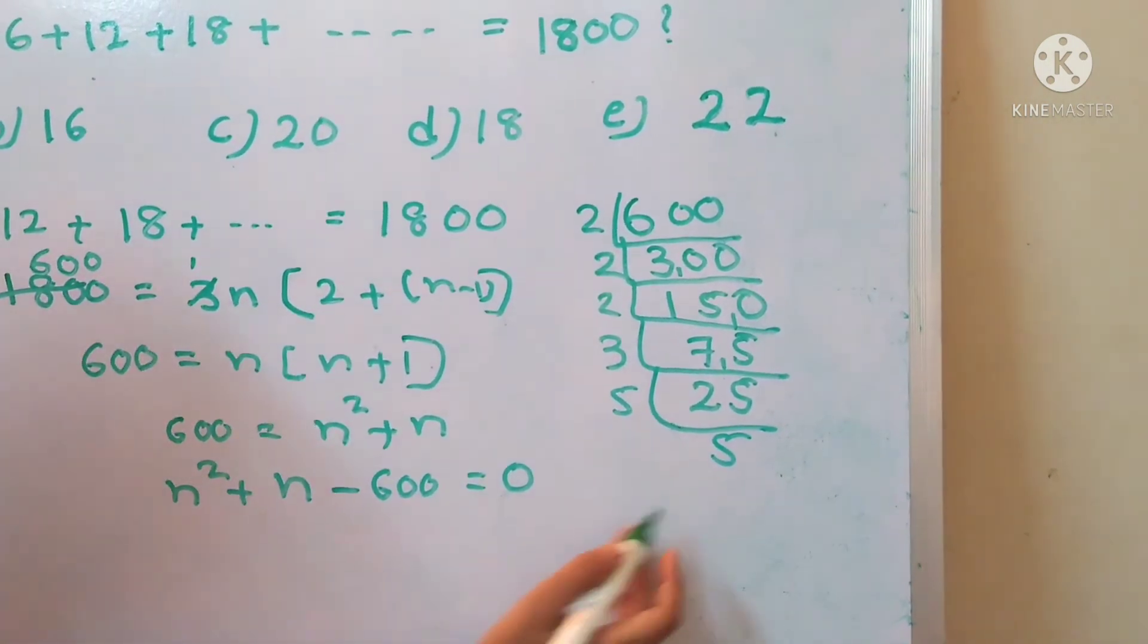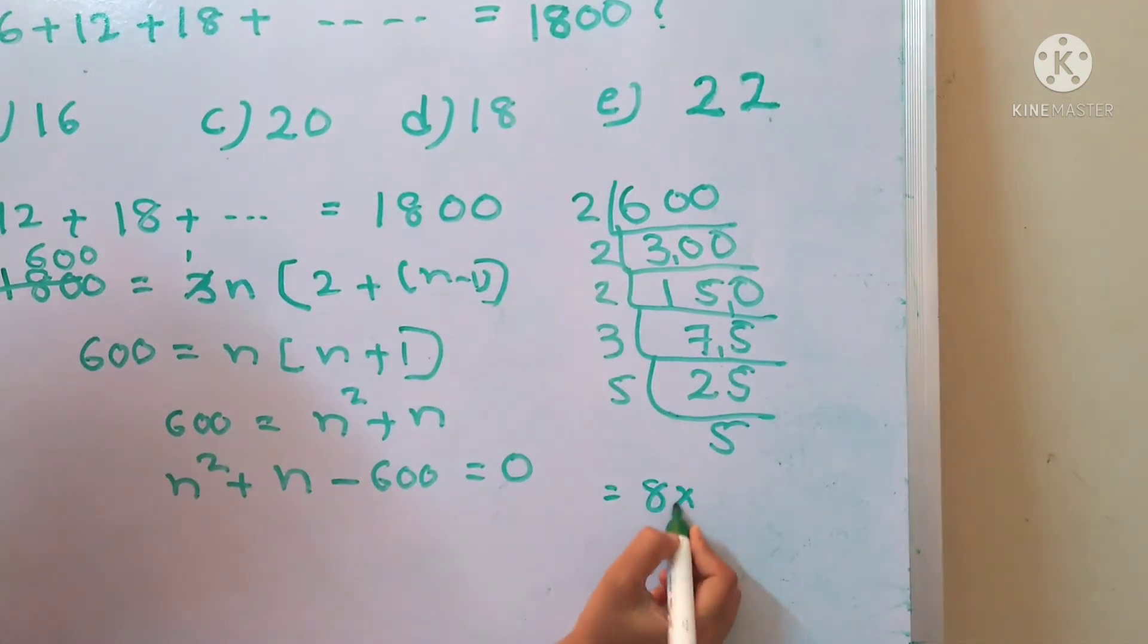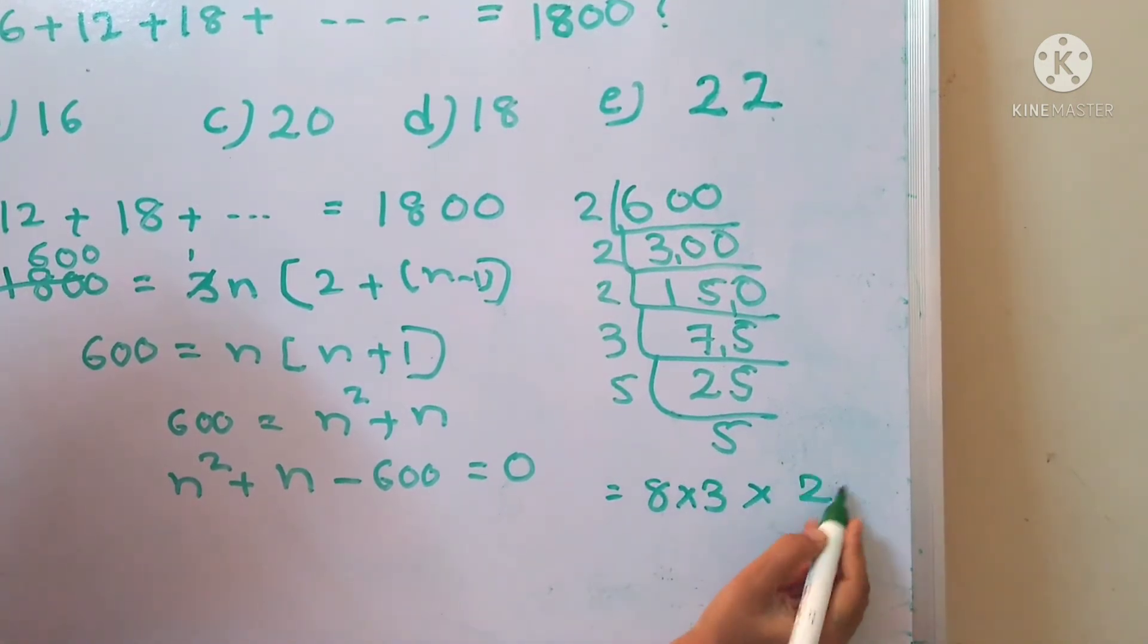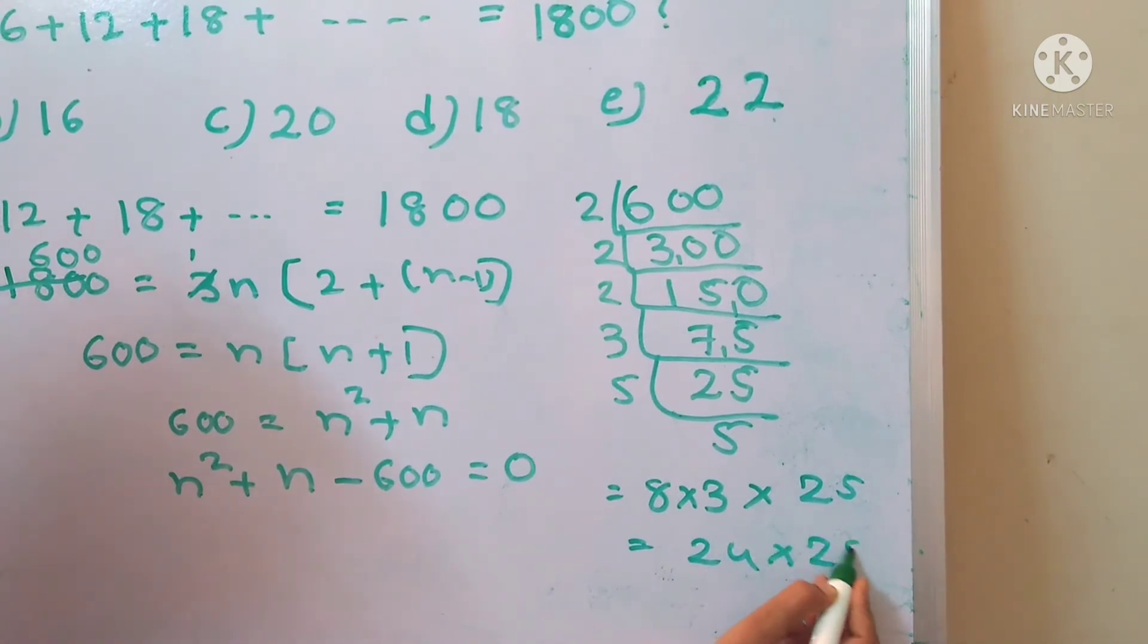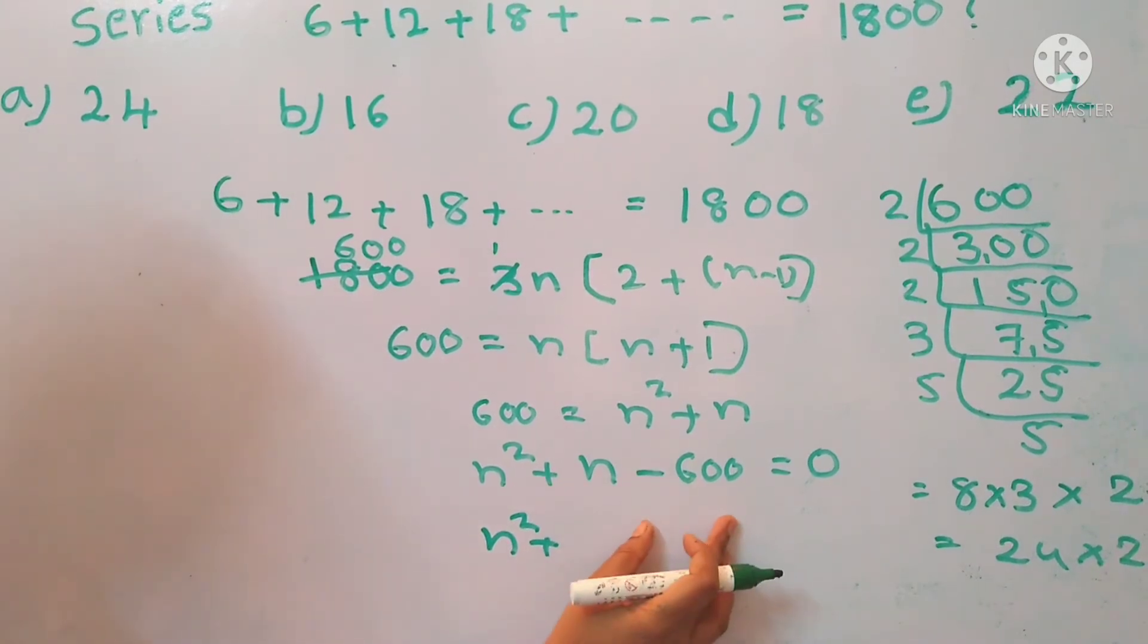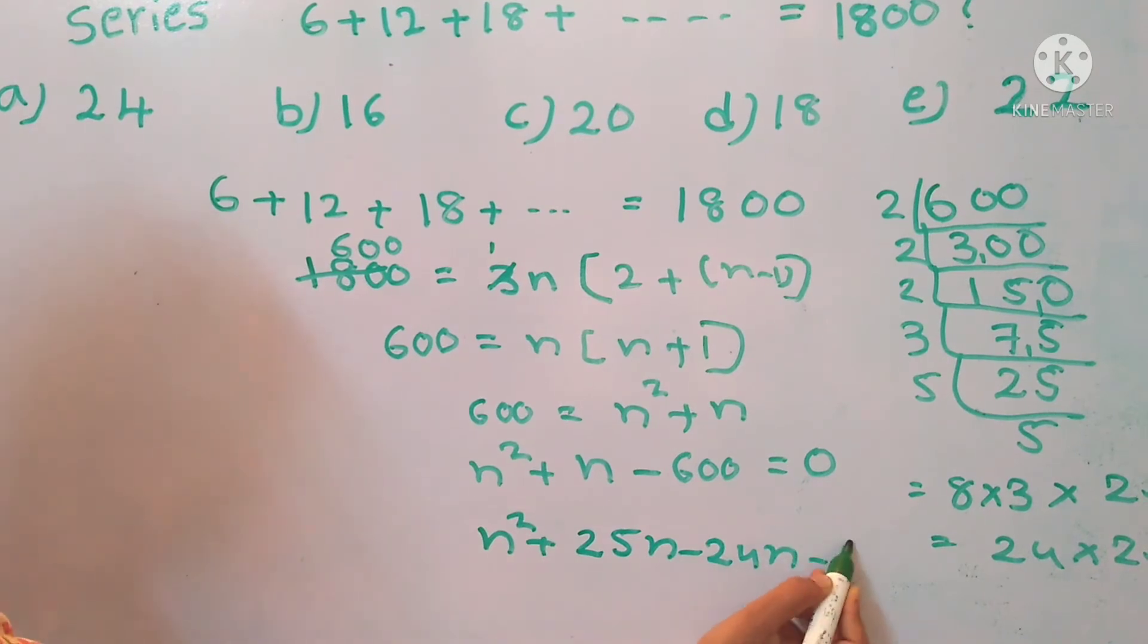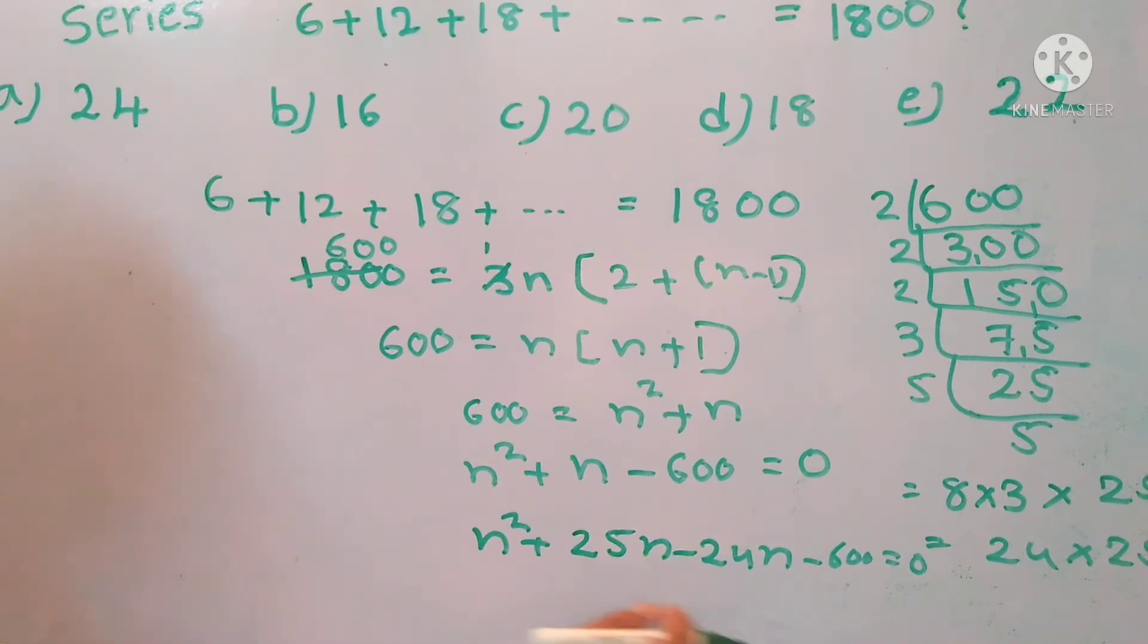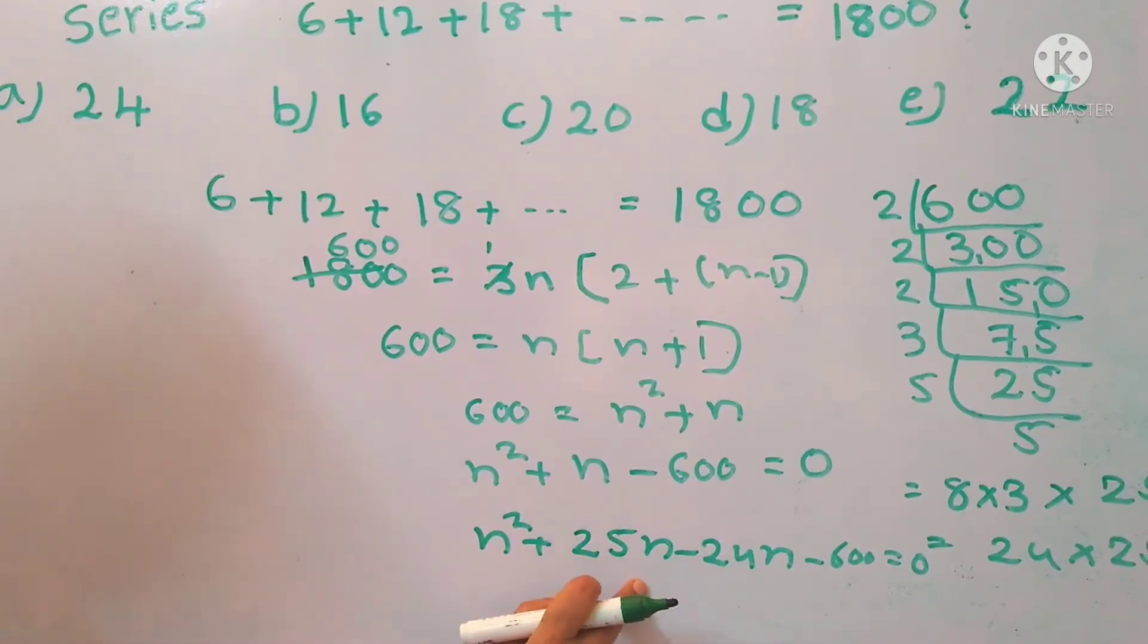Now 24 into 25 gives us 600. So the factors for 600 equals 24 into 25. Now n² + 25n - 24n - 600 equals 0. So 25 minus 24 equals 1, and 25n minus 24n equals n.